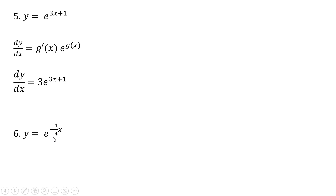Example 6: the derivative of minus 1/4 x is minus 1/4. That's brought down in front, and then multiplied by the original natural exponential function.